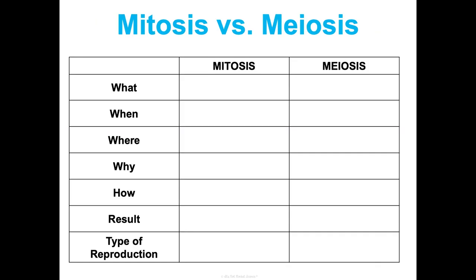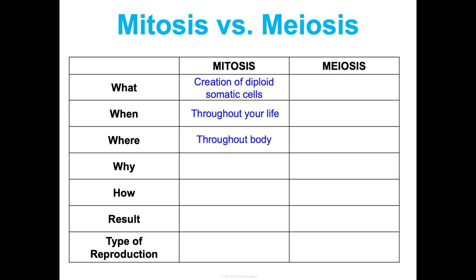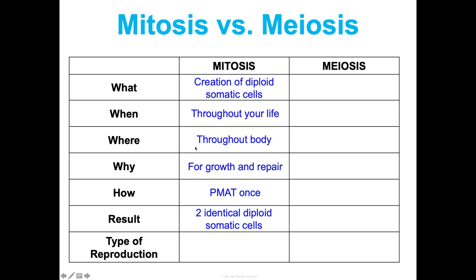It's really helpful to look at mitosis and meiosis side by side. Mitosis makes my toes — it makes my body cells. What does mitosis create? Diploid somatic cells. When? All the time — in the womb and throughout your entire life. Where? All over your body. Why? For growth and repair. How? We go through PMAT — prophase, metaphase, anaphase, telophase, and cytokinesis — one time, and the result is two identical diploid somatic cells, identical to each other and to the parent cell. This is considered asexual reproduction — you do this process all by yourself.